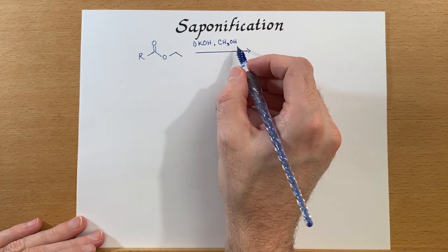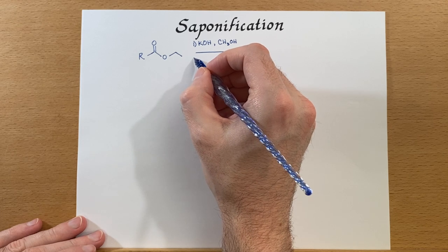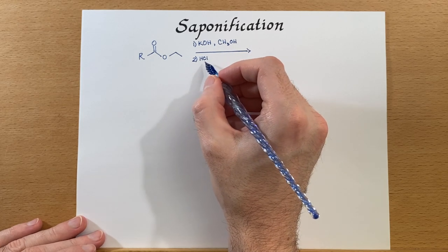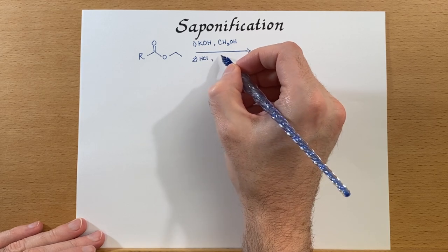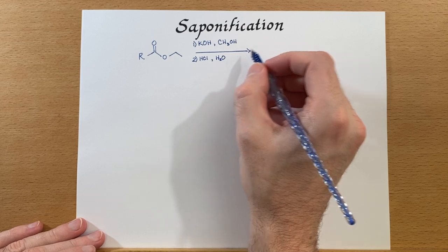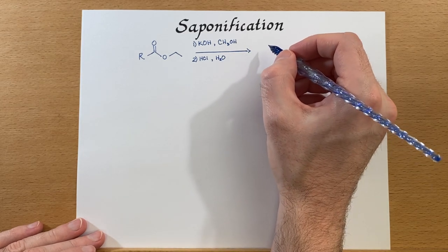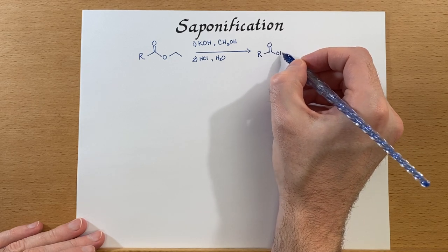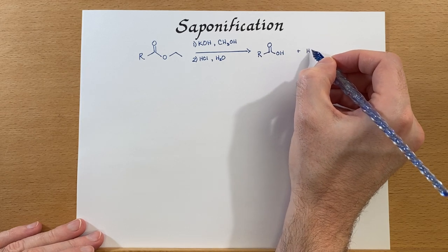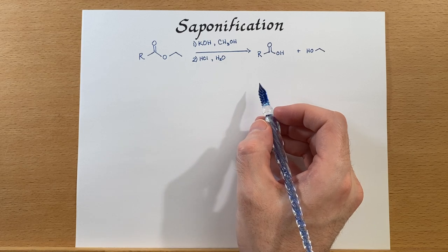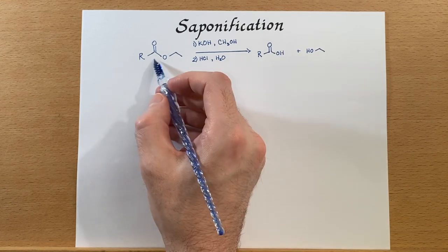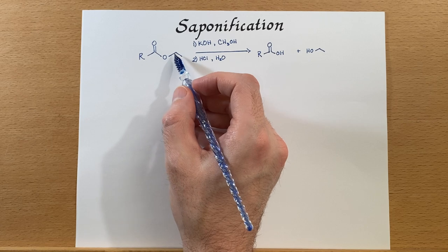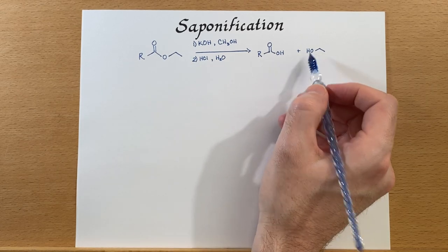We'll add a little bit of methanol as our solvent, and then afterwards we'll have an acid workup step — which is not something you would do if you were making soap, but it is something we would do if we wish to obtain the carboxylic acid. Our products are the carboxylic acid portion from our ester, and the alkyl group off of the oxygen will turn into an alcohol.